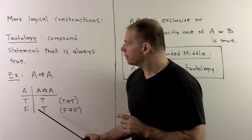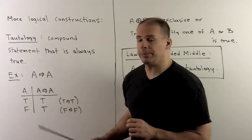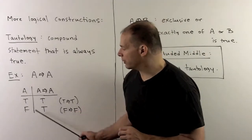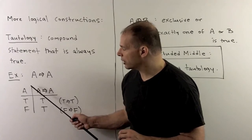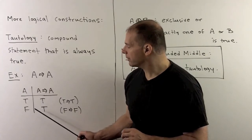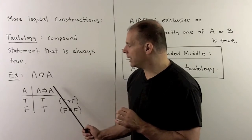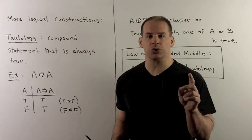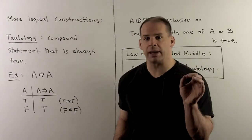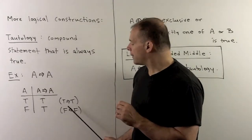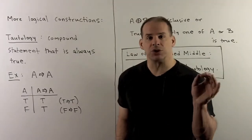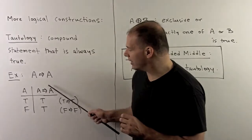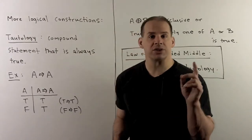For an example, let's consider A implies A — if A, then A. We set up the truth table, so the values for A can be either true or false. If we consider A implies A, we have either a true statement implying a true statement — that's true — or a false statement implies a false statement — also true. So we have all trues in the last column, making this a tautology.